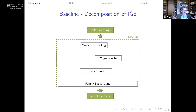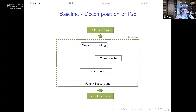Thinking about this schematically, we have a framework where parents' income impacts family background characteristics, investments, cognition measured at age 16, and years of schooling — all of which affect the child's earnings. We decompose the relative importance of all these different channels, and think about how they are related. For example, higher parental investments could impact cognition, which could in turn impact schooling, and thus children's earnings.